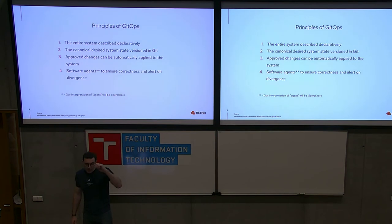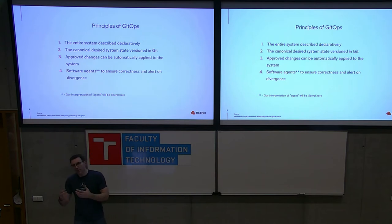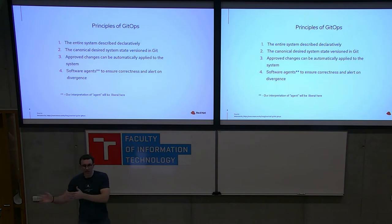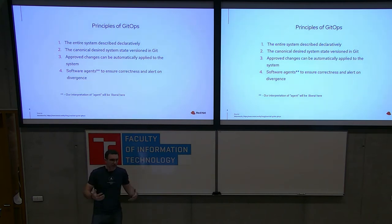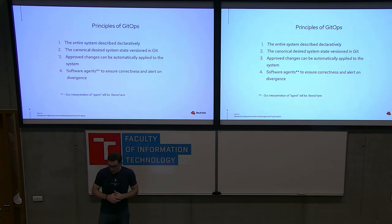Some of the principles of GitOps: the entire system is described declaratively, meaning instead of giving a set of instructions, you're giving a set of facts. You say 'there are 10 servers' — you don't say 'get me 10 servers.' You're stating what you need, and the system figures out how to bring them up. Another way people refer to declarative is as 'desired state' — I need 10 servers, that should be my state; if I don't have that state, get me there, whether scaling down or up.